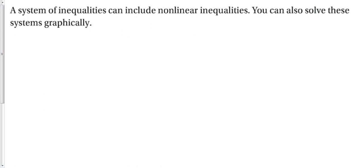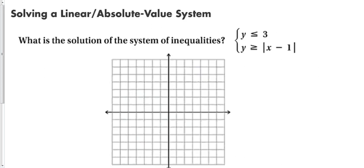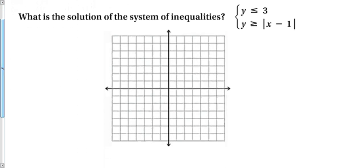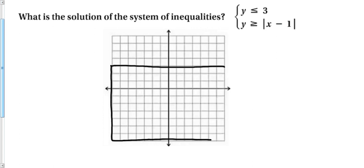Not only can we graph regular inequalities, but we can also do this with non-linear inequalities. So far we've studied one non-linear type — absolute value inequalities. When graphing these, we do it the same way: make sure it's in slope-intercept form for a line, or standard form for an absolute value equation. My first inequality is y ≤ 3, which is just a horizontal line, and I want y to be less than that, so the region is below the line.